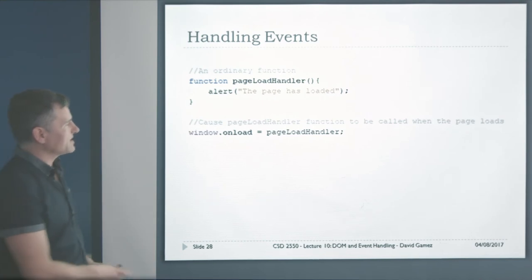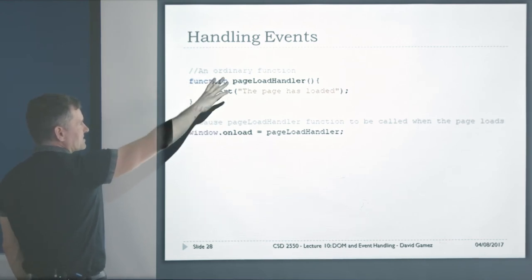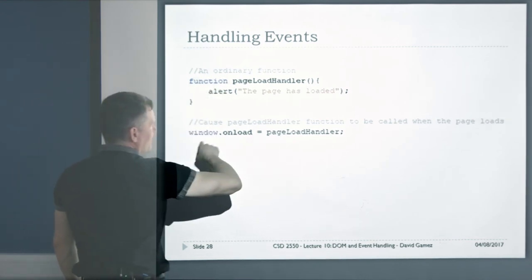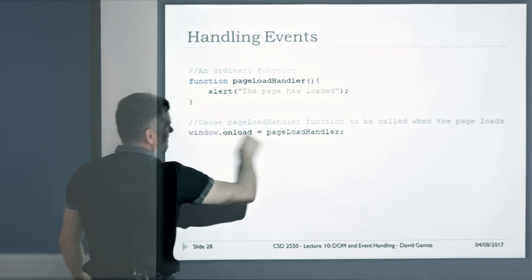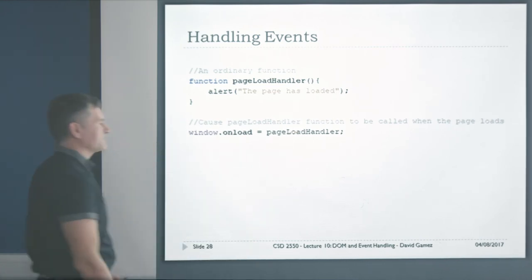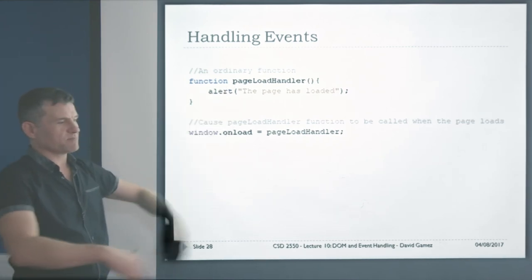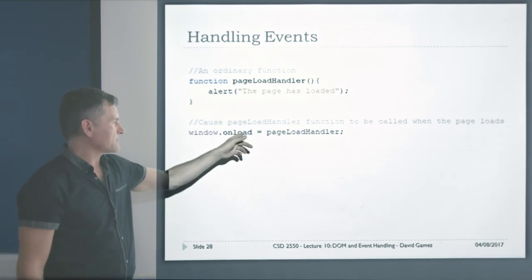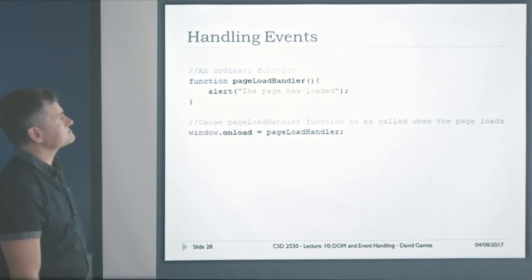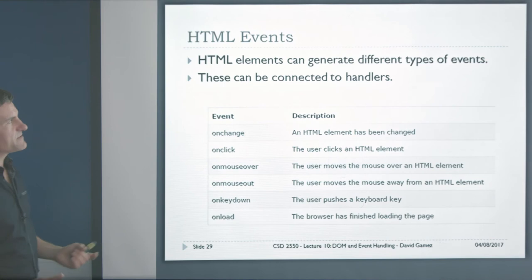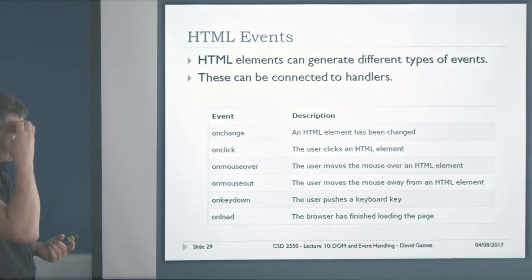Here's an example: we have a piece of code we want to run when the page loads — a standard JavaScript function called pageLoadHandler. There's a window.onload event, and we say that when this event occurs, we want to call this function. So window.onload is pointing to the pageLoadHandler. When the browser loads the page, it will trigger this event, which will call that piece of code.